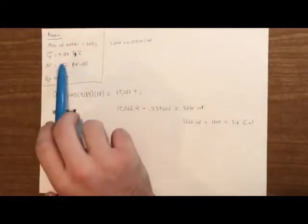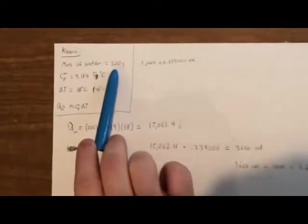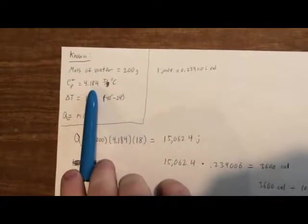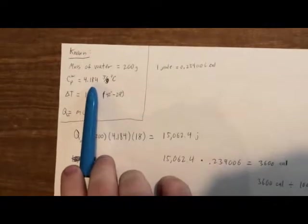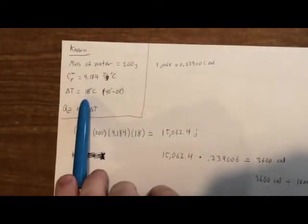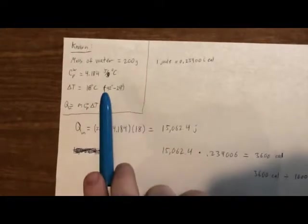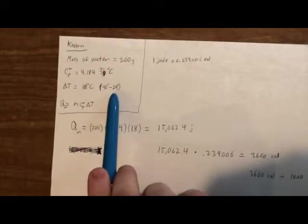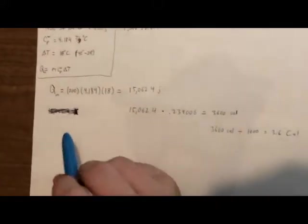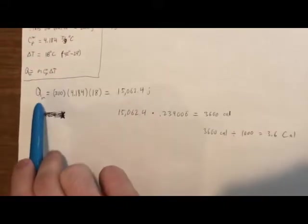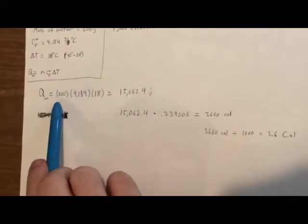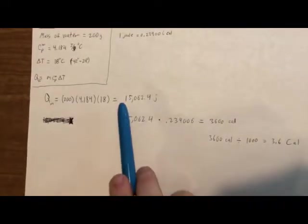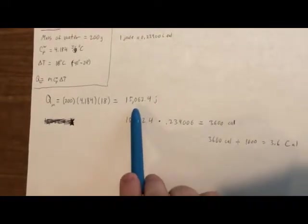All right, so here we have our knowns. We know the mass of our water, which is 200 grams. We know the specific heat capacity of our water, which is 4.184 joules per gram degree C. We know our change in temperature, which is 18 degrees Celsius. Our ending temperature was 42 degrees, subtracted by our beginning temperature, which was 24 degrees. And now we solve for the amount of heat in. We have mc delta T, which is our mass times our specific heat capacity times our change temperature, which comes out to about 15,062.4 joules.